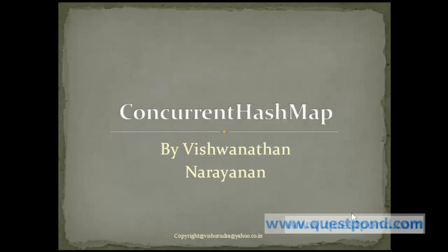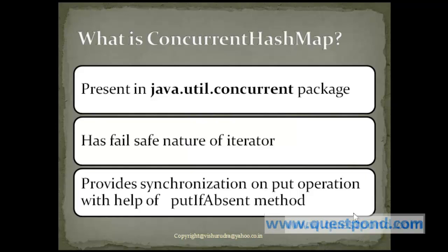In this tutorial we will learn about concurrent hashmap. Concurrent hashmap is present within the java.util.concurrent package, which was introduced in Java 5. It allows us to keep track of keys and values, which is what hashtable and hashmap used to give us. In the same way, concurrent hashmap is also used to provide key and value mappings.